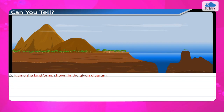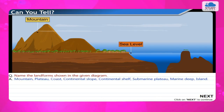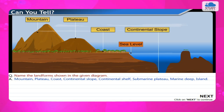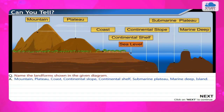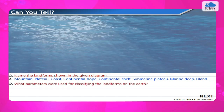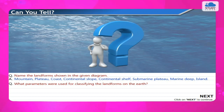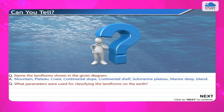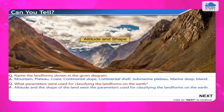The landforms shown in a typical diagram include Mountain, Plateau, Coast, Continental Slope, Continental Shelf, Submarine Plateau, Marine Deep, and Island. The parameters used for classifying landforms on the earth are altitude and the shape of the land.